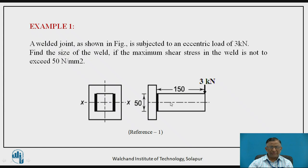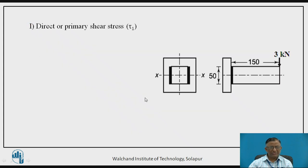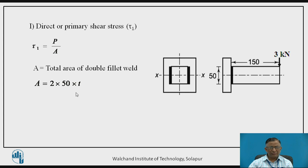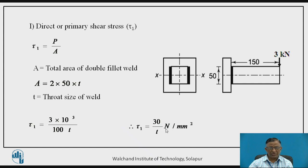Now let us consider an example where a rectangular beam is welded to a vertical support by two parallel vertical fillet welds and subjected to an eccentric load at a certain distance. This eccentric loading causes a direct force and a bending moment, giving primary shear stress tau_1 calculated as load by area. The total area is 2 × 50 × T, since each weld length is 50 mm and there are two welds with throat size T. Substituting the 3 kN load, we calculate tau_1 = 30 / T N/mm².